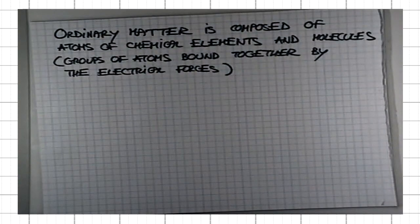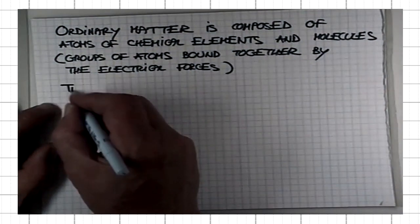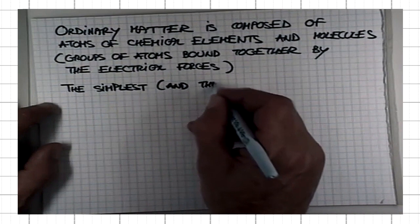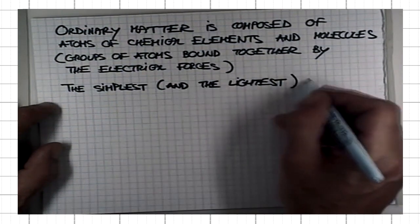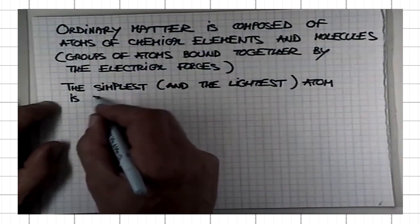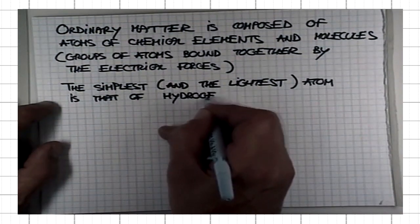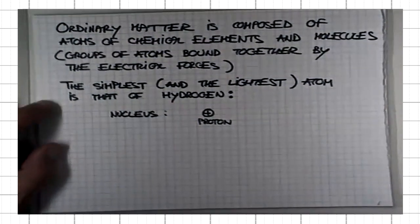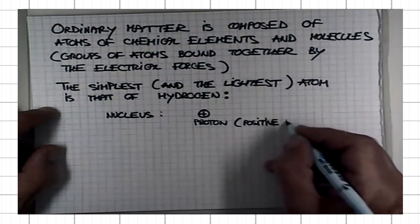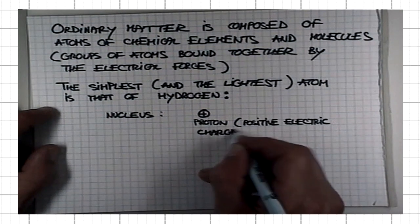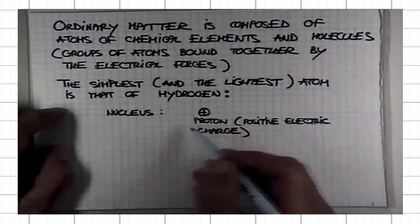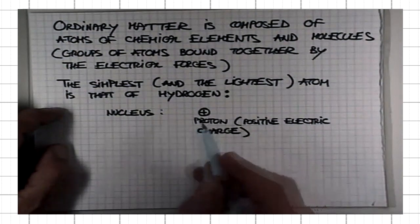The simplest atom is that of hydrogen. Its nucleus consists of a proton with positive electric charge, and a neutral hydrogen atom has one electron moving around this nucleus.